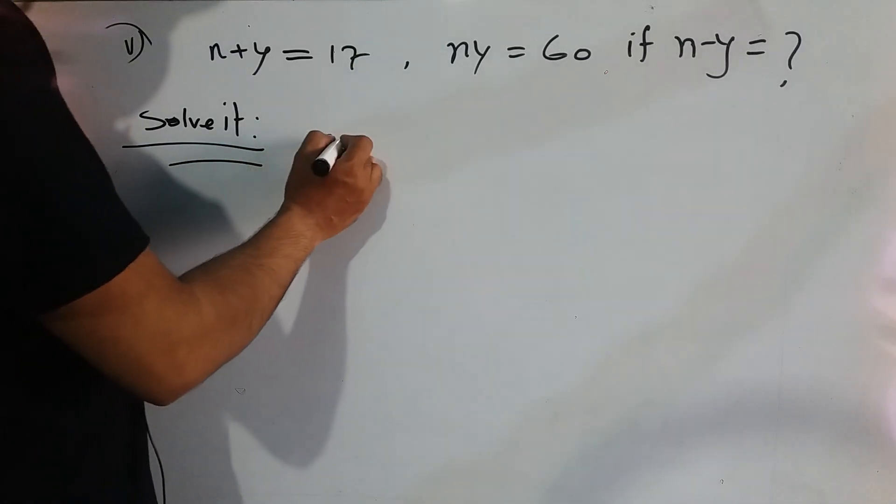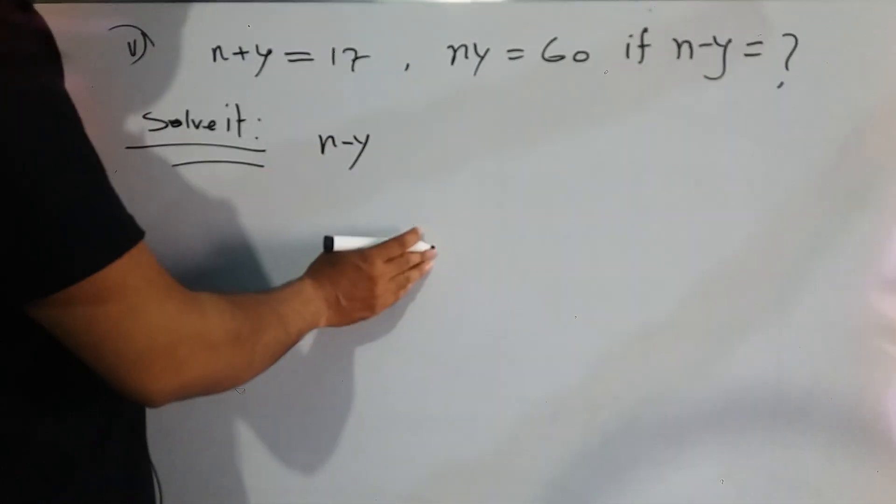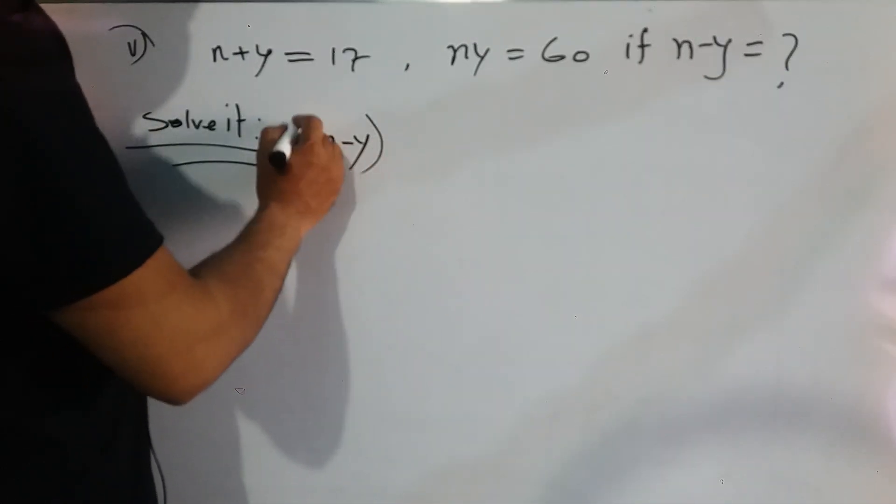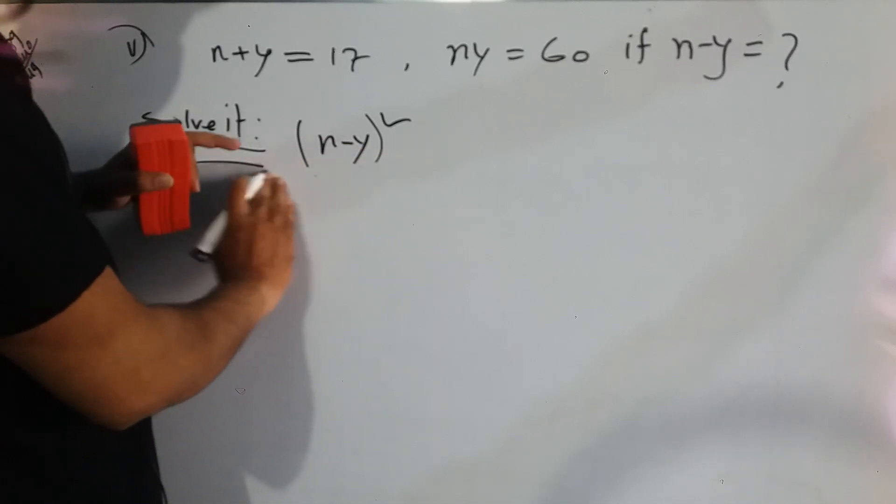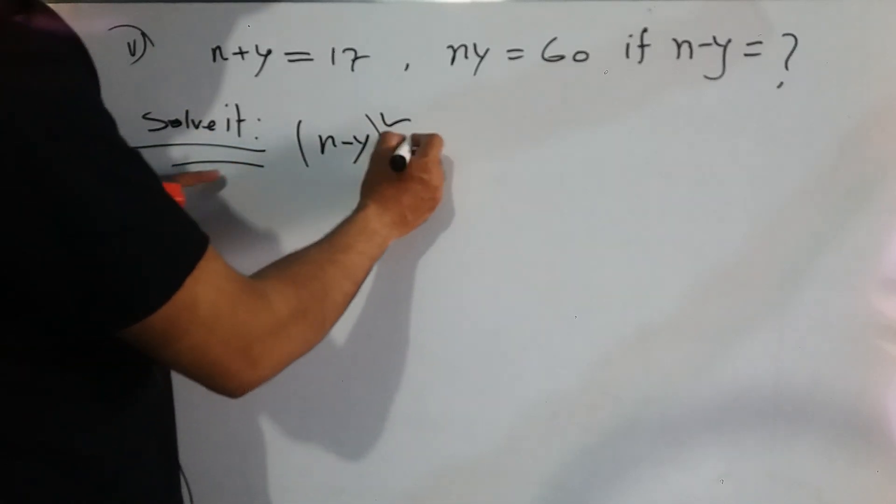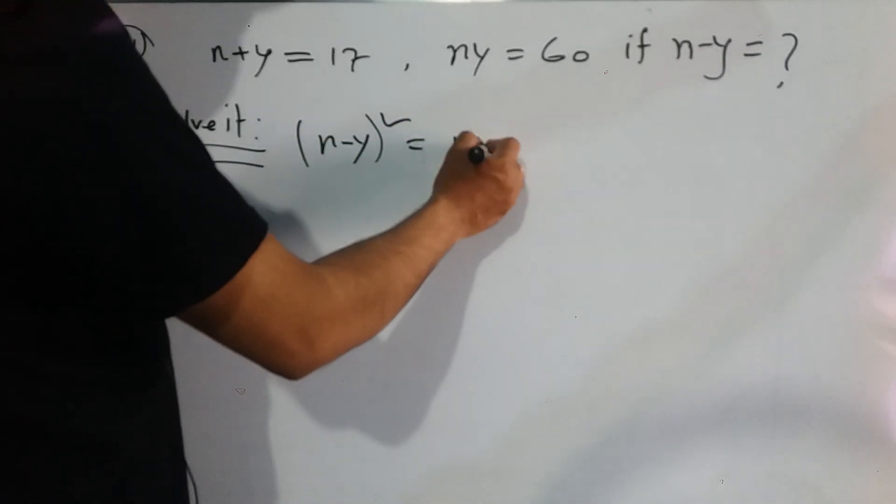We need to find out the value of x minus y, so we write down x minus y whole square because we are finding the value of x minus y. So x minus y equals, we write down x plus y whole square.